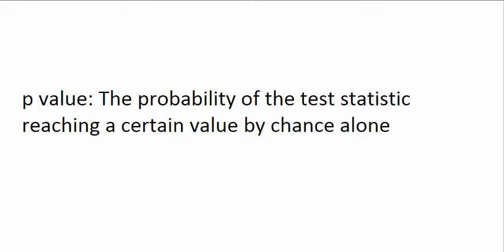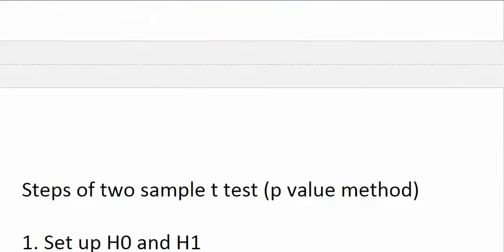In a two-sample t-test using the p-value method, you calculate your t-score with your data set, then calculate the p-value of your t-score. That p-value tells you how likely your t-score is to be reached by chance. If your p-value comes out to a small number, you know you observed an outcome unlikely to happen by chance, and that's when you can confidently say your results are not due to chance — you reject the null hypothesis. Now let's go over the steps of a two-sample t-test using the p-value method.